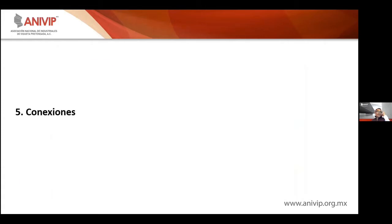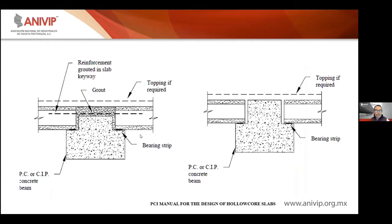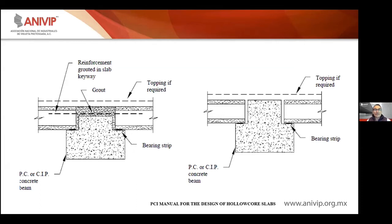Algunas conexiones típicas —disculpen que estén en inglés— fueron tomadas del manual del PCI para el diseño de losas alveolares. El manual de la NIPAC también es muy bueno y seguramente más completo; también encontrarán información sobre placas alveolares en ese manual. Deben de haber cientos de tipologías de conexiones; traté de seleccionar algunas de las más utilizadas.